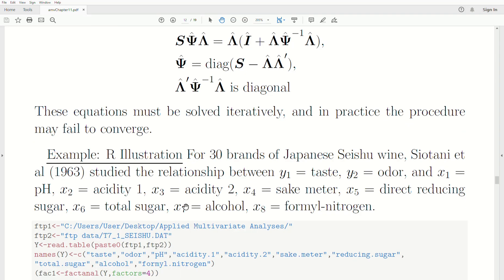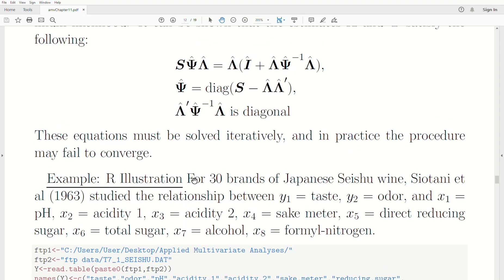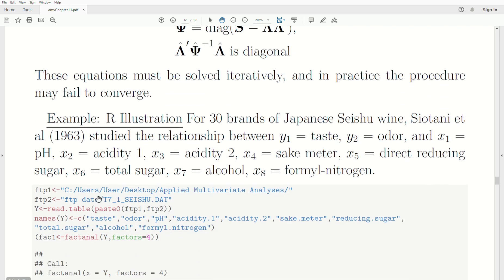A quick example using the R function. Let's say we have 30 brands of Japanese wine. This was studied in 1963, and they were looking at the relationship between taste, odor, and these other variables: pH, acidity 1 and 2, the sake meter, different types of sugars and alcohols. Here we're going to see if we can model the correlation matrix with factor analysis.